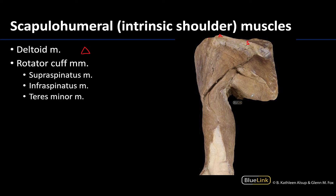We can see a bit of the posterior rotator cuff muscles. We are looking at a posterior view because there is the spine of the scapula. Superior to the scapular spine you are going to have the supraspinatus, and inferior to the scapular spine you will have the infraspinatus, which is the larger one, and then the teres minor, which is the small muscle. The teres major, the larger muscle, is not a rotator cuff muscle, so we will focus mainly on the rotator cuff muscles.